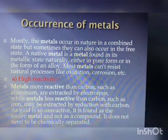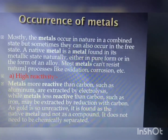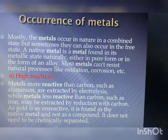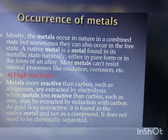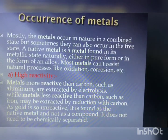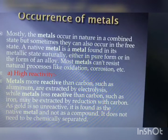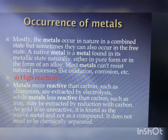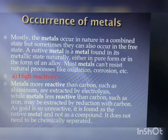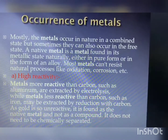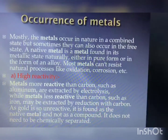The next topic is the occurrence of metals. Mostly, metals occur in nature in a combined state, but sometimes they can also occur in the free state. A native metal is a metal found in its metallic state naturally, either in pure form or as an alloy. Most metals cannot resist natural processes like oxidation and corrosion.